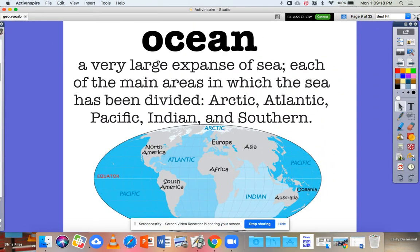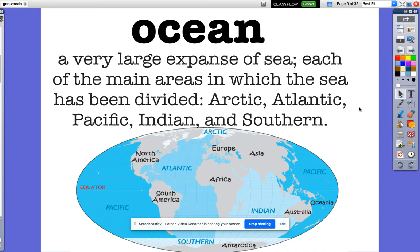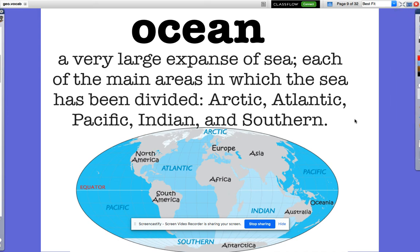Next is the word ocean. An ocean is a very large expanse of sea, each of the main areas in which the sea has been divided: Arctic, Atlantic, Pacific, Indian, and Southern.